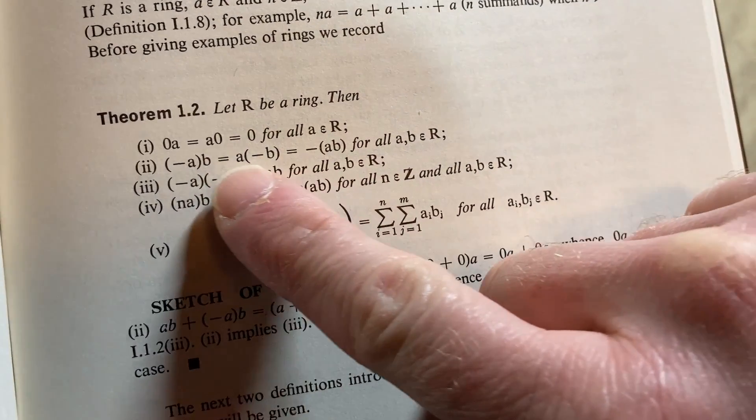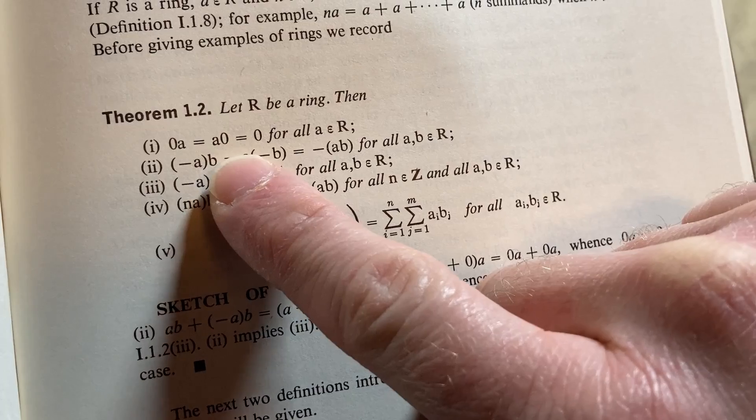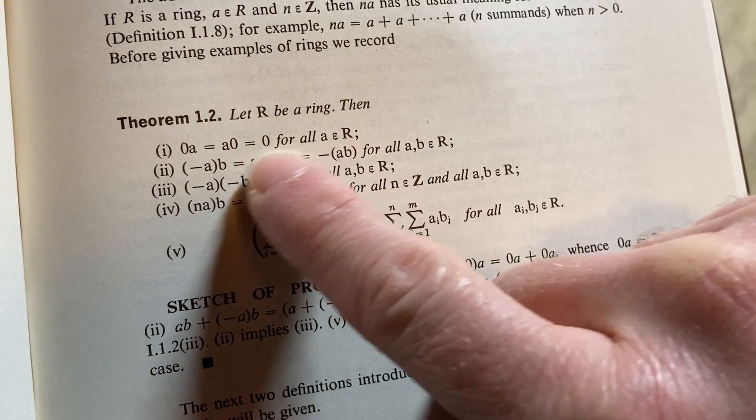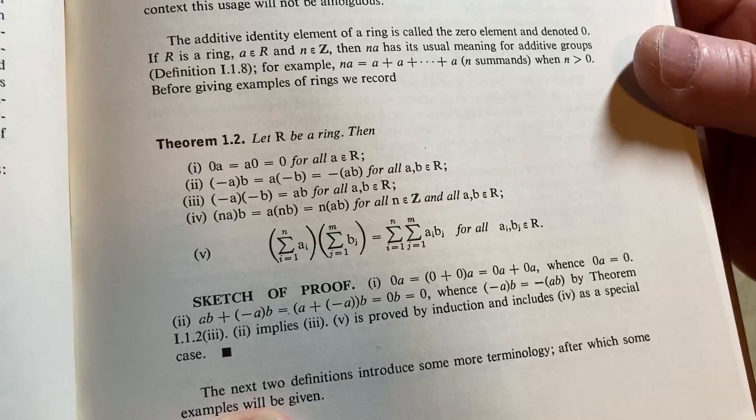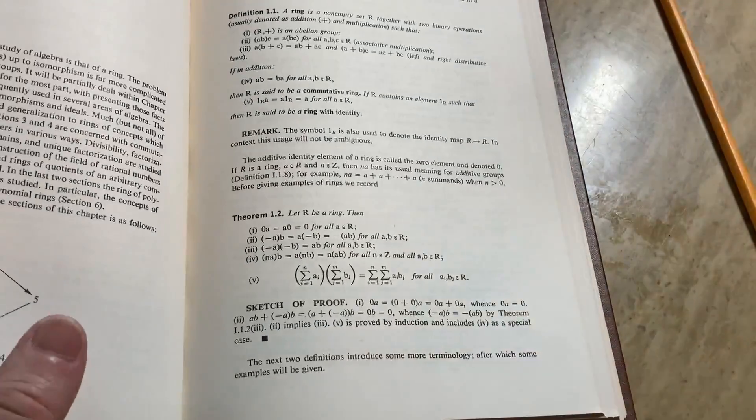Let's look at this here. Let R be a ring. Then 0 times a equals a times 0 equals 0 for all a in R. Let's go through this proof. It's a very simple statement, but let's go through the proof and justify the steps.